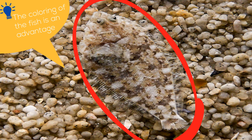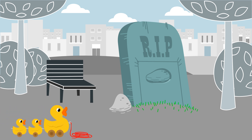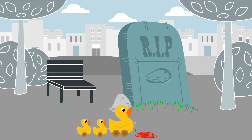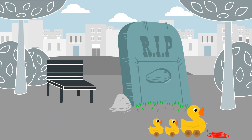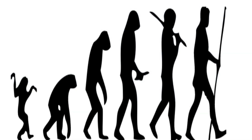Up next is selection or death. Some organisms, due to variation, will be more fit to survive and reproduce in their environment, and are more likely to pass their traits to the next generation.